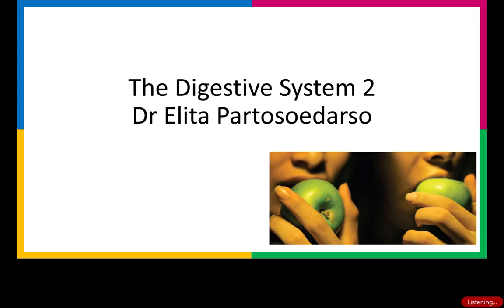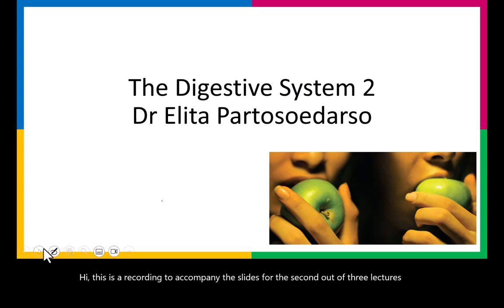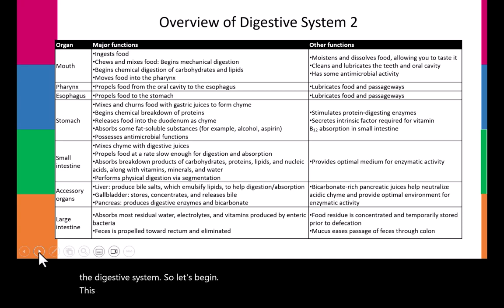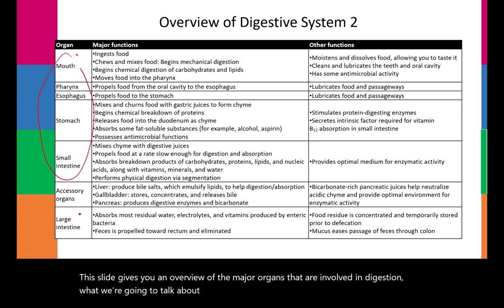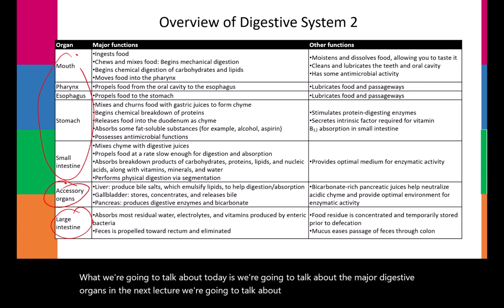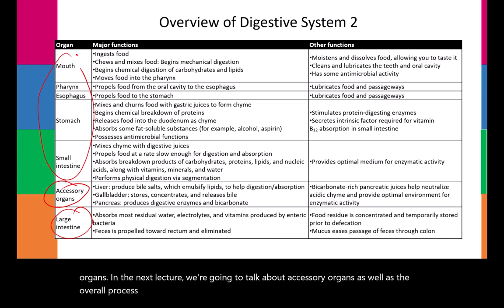Hi, this is a recording to accompany the slides for the second out of three lectures on the digestive system. This slide gives you an overview of the major organs involved in digestion. Today we're going to talk about the major digestive organs. In the next lecture, we'll talk about accessory organs as well as the overall process of digestion and absorption.